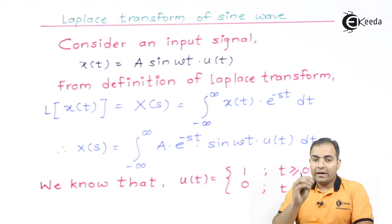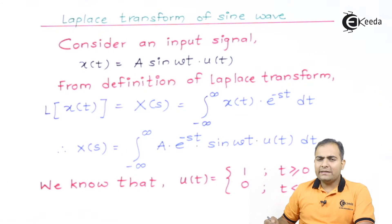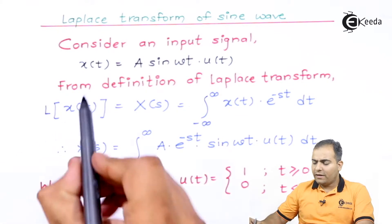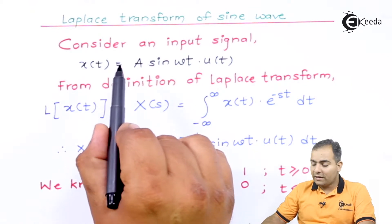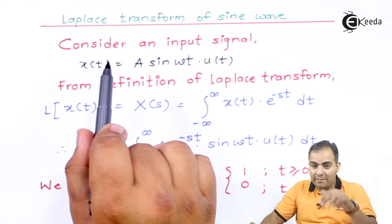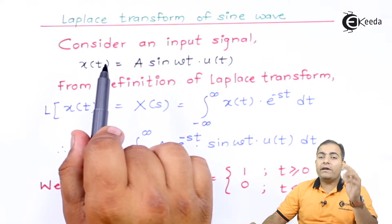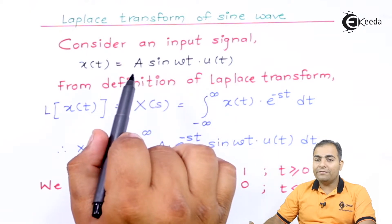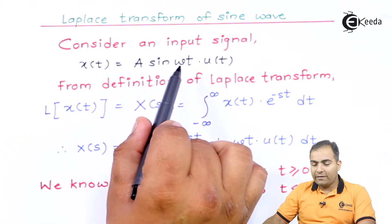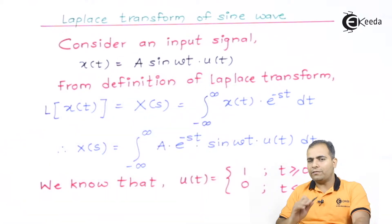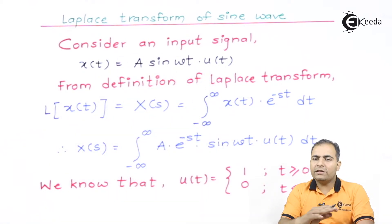I have multiplied this sine wave with the unit step function. The signal x(t) = a·sin(ωt)·u(t), where a is the amplitude or maximum peak value of the sine wave, ω is the angular frequency varying with respect to time, and multiplication by u(t) makes the function a causal signal.